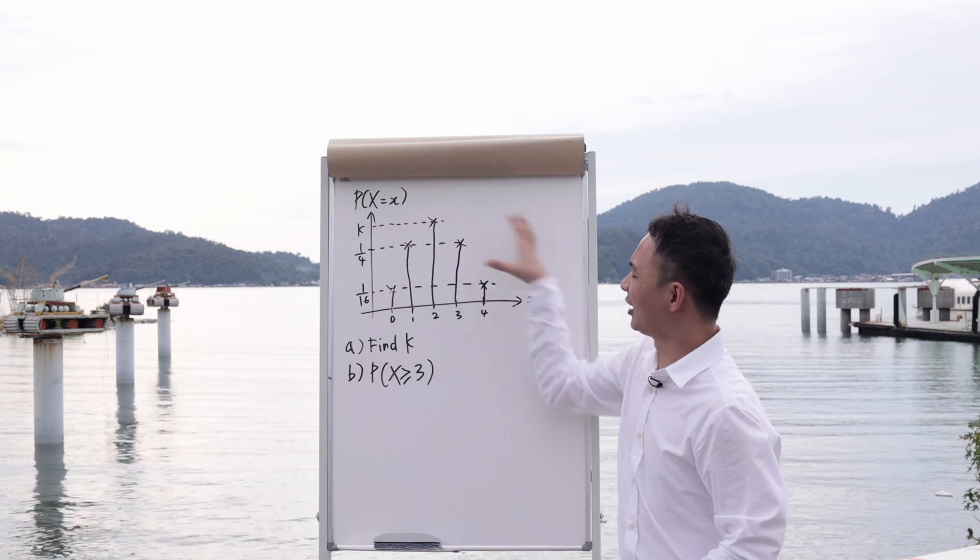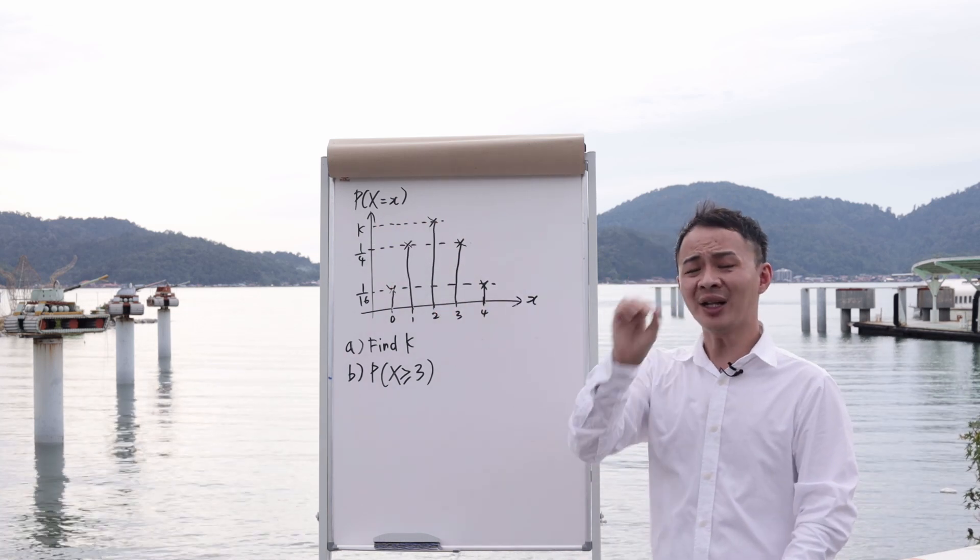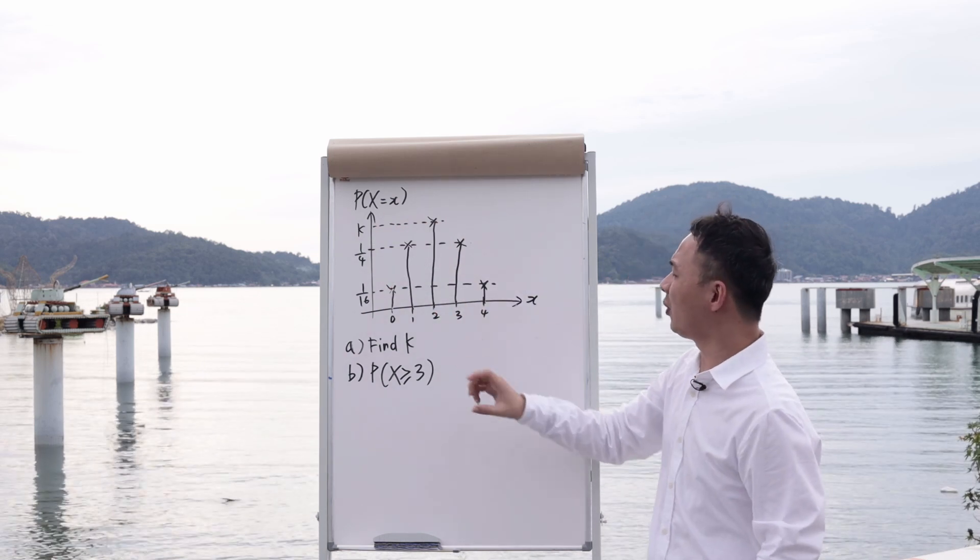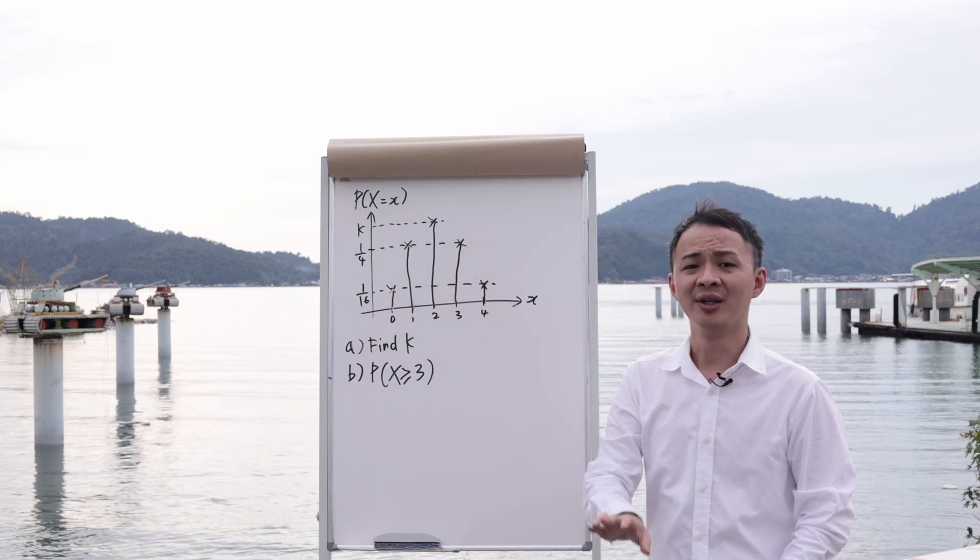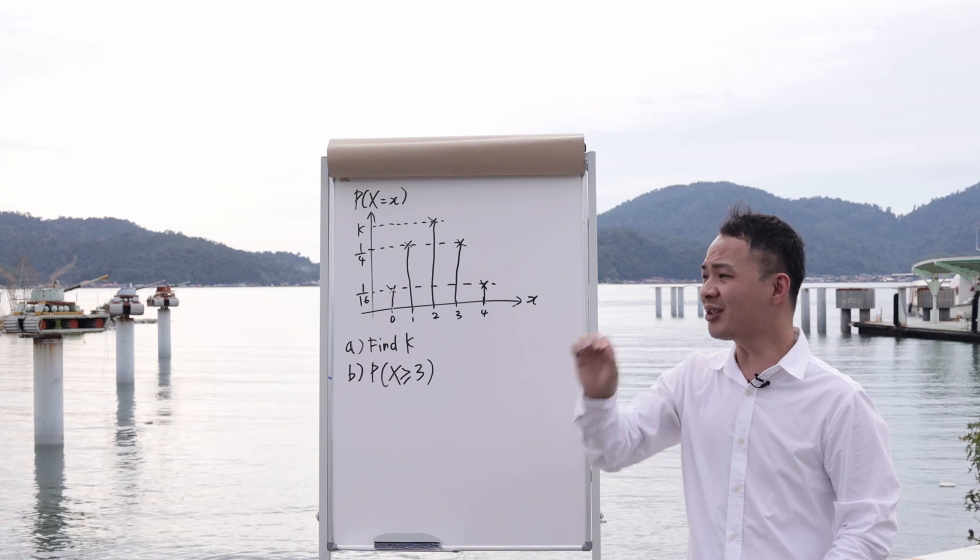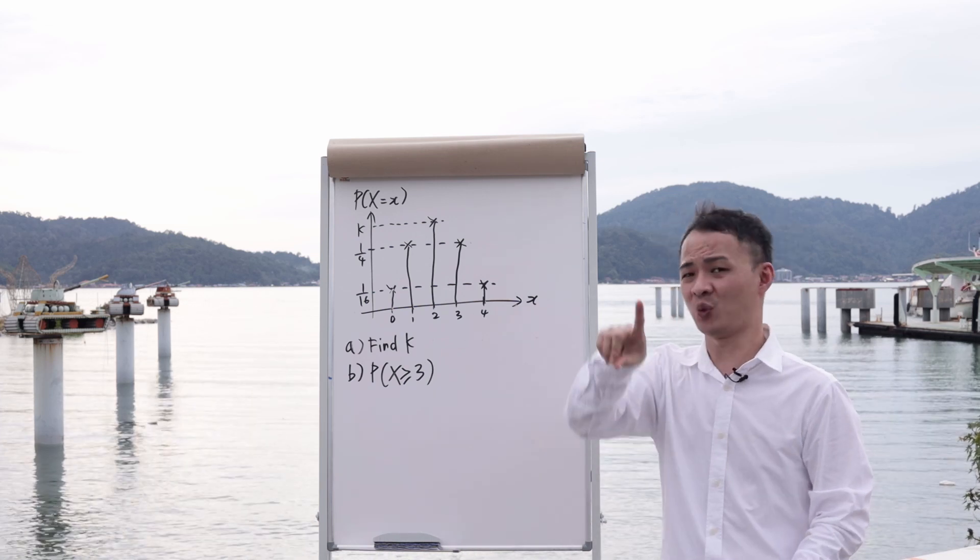For this kind of graph here, the one thing that is very important is you need to know all the probabilities add up together must always equal to one. Because for probability, when something must happen, it's always one.